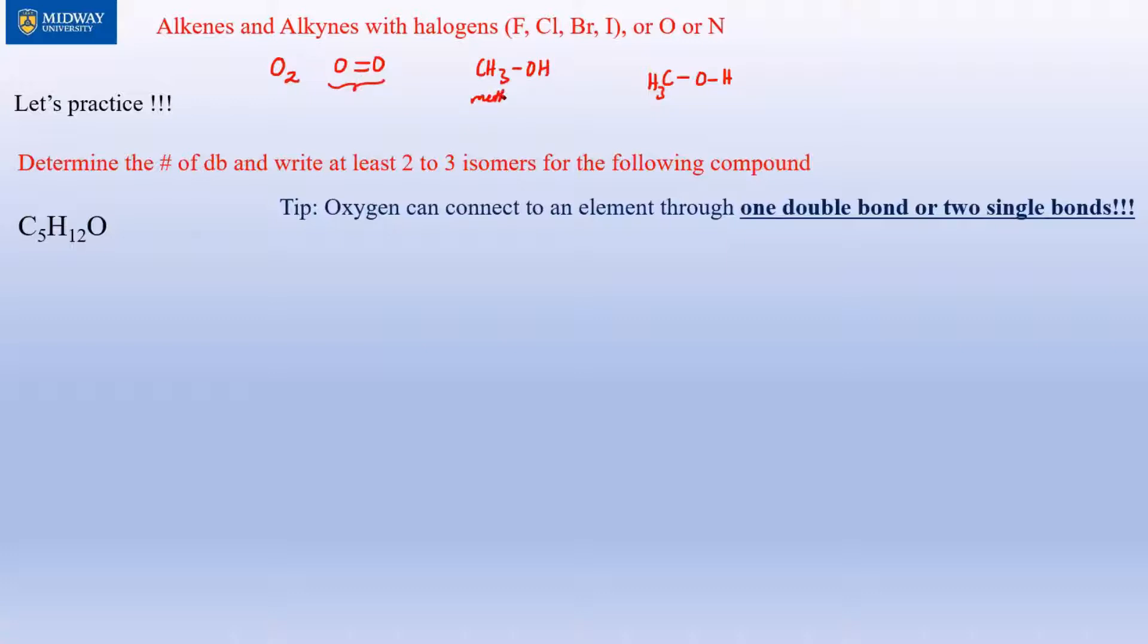In the case of methanol, we haven't learned nomenclature of alcohols yet, but I just gave that example to prove my point. Oxygen in this case is attached to two elements. What I mean by two single bonds is essentially when it has to be two separate elements or two different elements. You see that oxygen is attached to two single bonds; here it's one double bond.